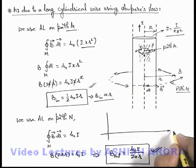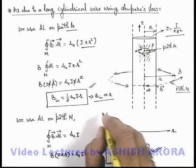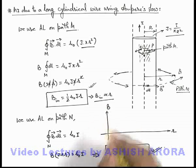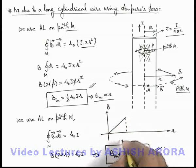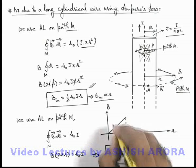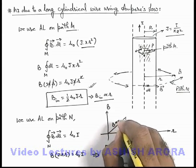If we plot a graph between the distance from axis of wire and magnetic induction here you can see inside it will be a straight line, up to r equal to capital R because B inside is proportional to r.